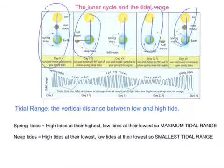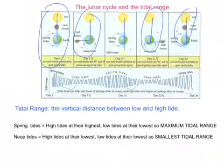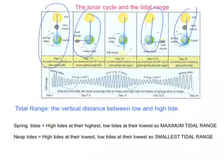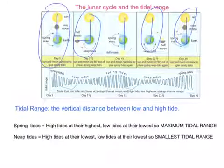Just to be clear on tidal range: it is the vertical distance between low and high tide. Spring tides have the high tides at their highest and the low tides at their lowest, so there is the biggest distance between the tidal ranges. In contrast, neap tides have the high tides at their lowest point and the low tides closer together, so there is the smallest tidal range.